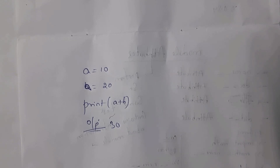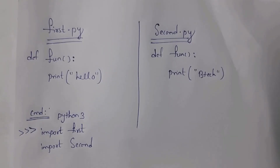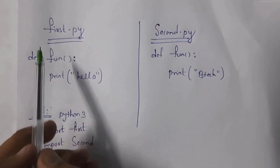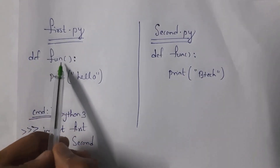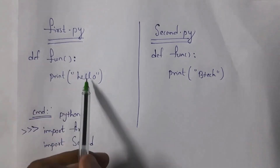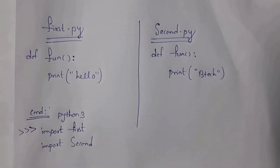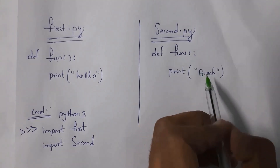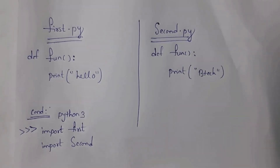Consider this example: there are two modules — first.py and second.py. The module first.py contains a function called fun, and inside that function there is a print statement that outputs 'hello'. Similarly, second.py contains a function also called fun, and that function contains a print statement that outputs 'btec'.